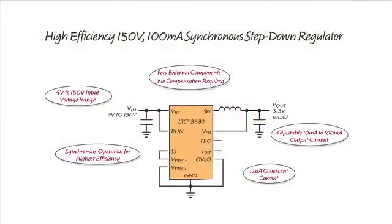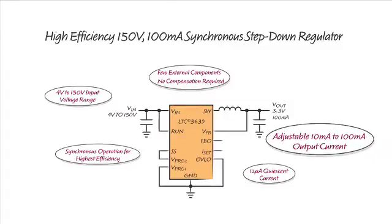The LTC3639 also features a resistor programmable peak current threshold, which can be programmed to limit the peak inductor current from 20 milliamps to 200 milliamps. This enables efficiency and component selection to be optimized for load currents from 10 milliamps to 100 milliamps.